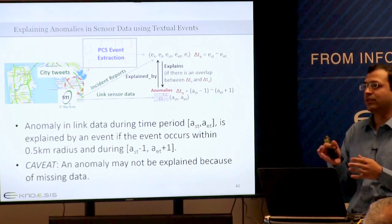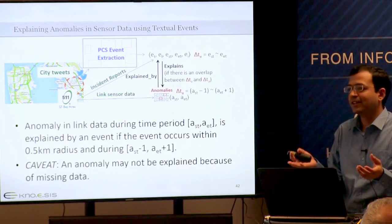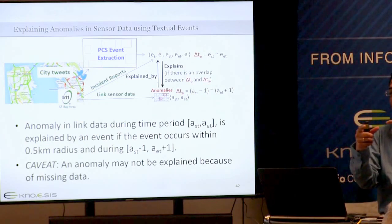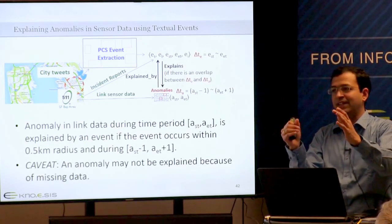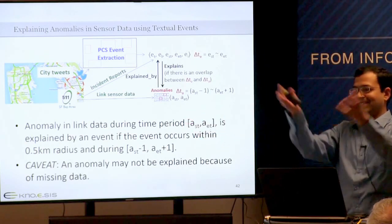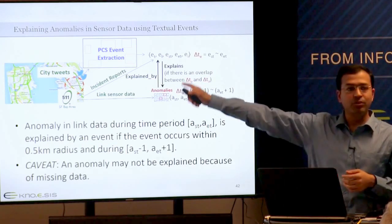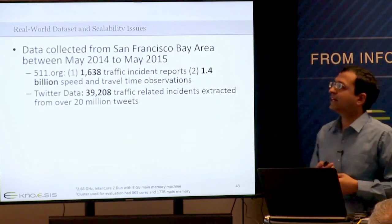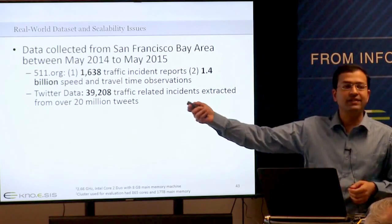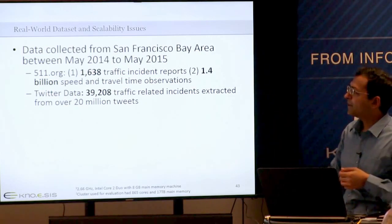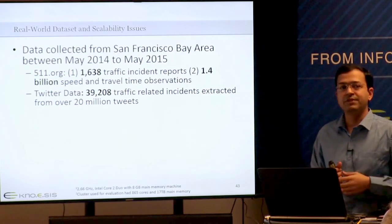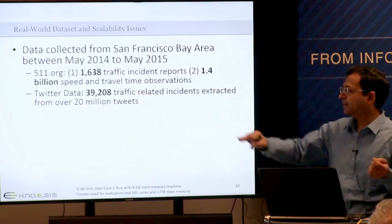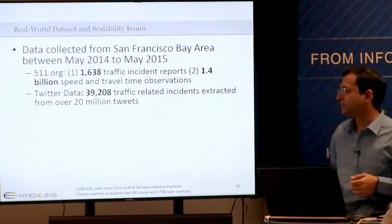A committee member notes that the 0.5-kilometer radius will depend on density: in a dense area, take a smaller radius; in a sparse area, take a larger one. The presenter confirms: in the San Francisco Bay Area, the center of the city has more links and as you go away there are fewer, so the radius may need to vary. They chose 0.5 km focusing on the city center. The dataset has over 1.4 billion speed and travel time observations collected continuously over more than a year, over 1,600 events from 511.org, and approximately 39,000 traffic-related events extracted from 20 million tweets.